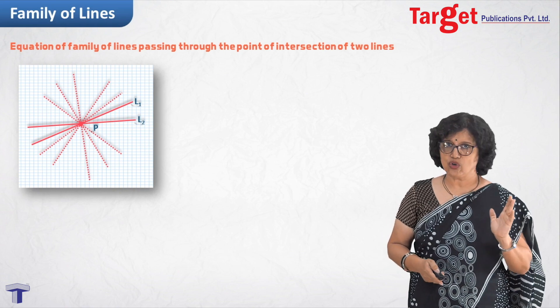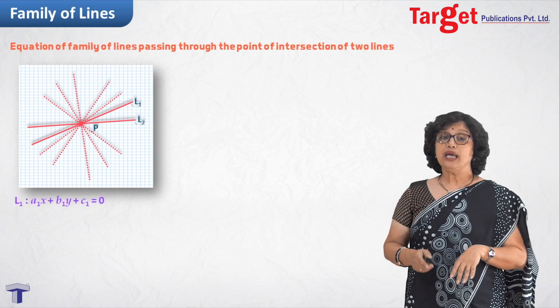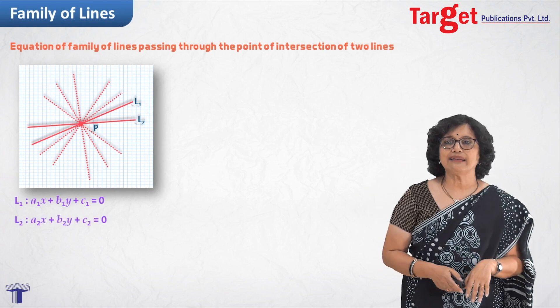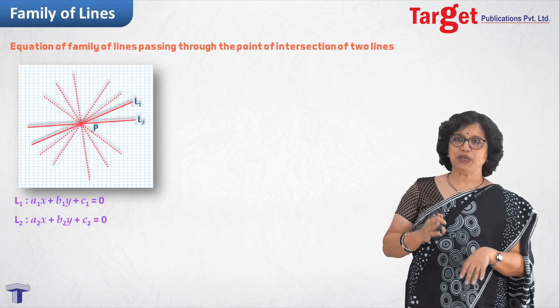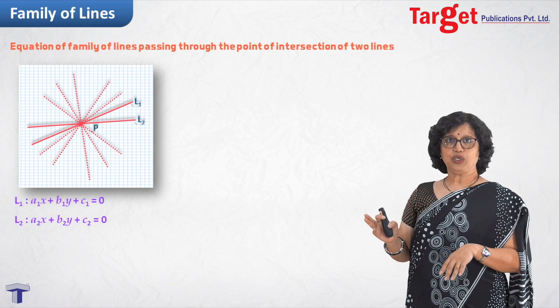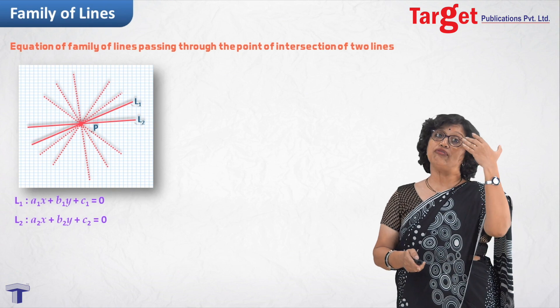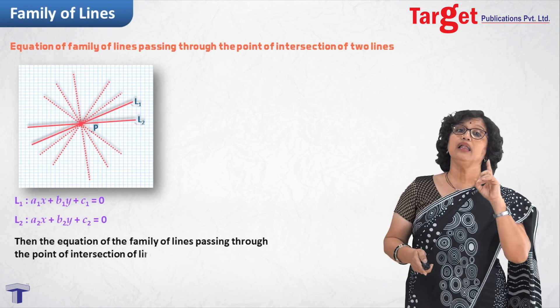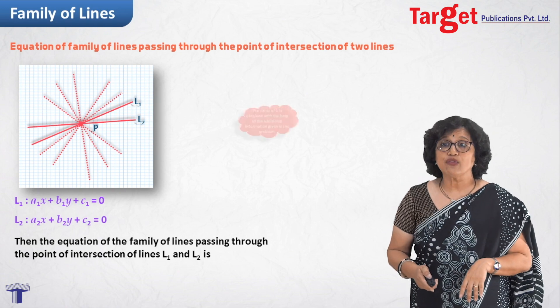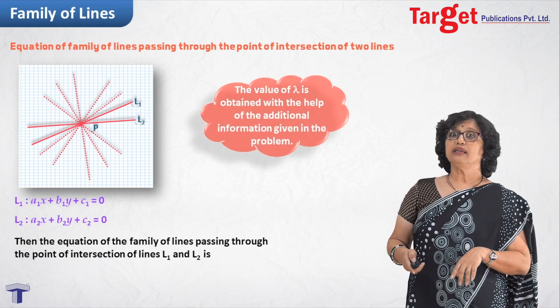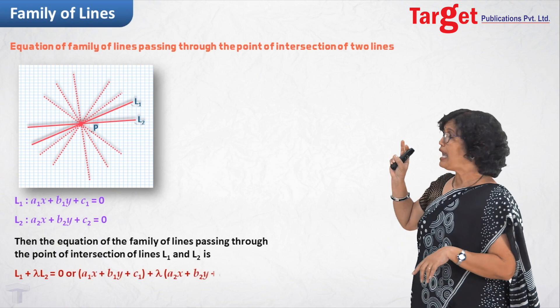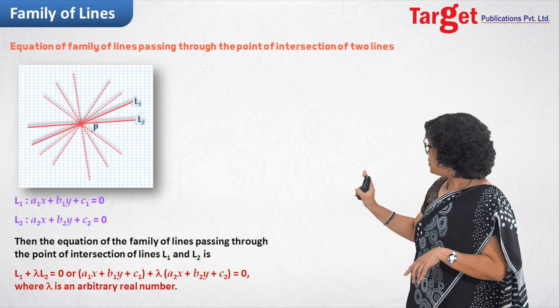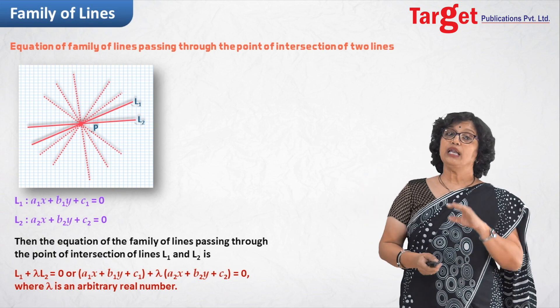Now, am I in position to write equation of family of lines? Now, if first line L1 is A1x plus B1y plus C1 equal to 0. And the other line is A2x plus B2y plus C2 equal to 0. Then, what would be equation of family of lines? And that family of lines is given by L1 plus lambda L2 equal to 0. And that would give me finally nothing but A1x plus B1y plus C1 plus lambda times A2x plus B2y plus C2 equal to 0. Now, what is lambda? It's an arbitrary constant.